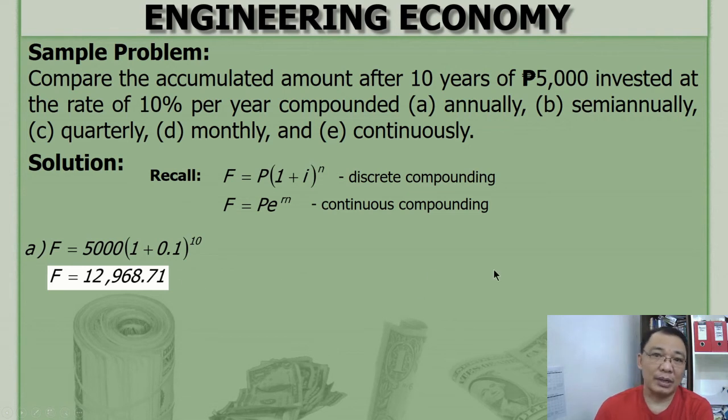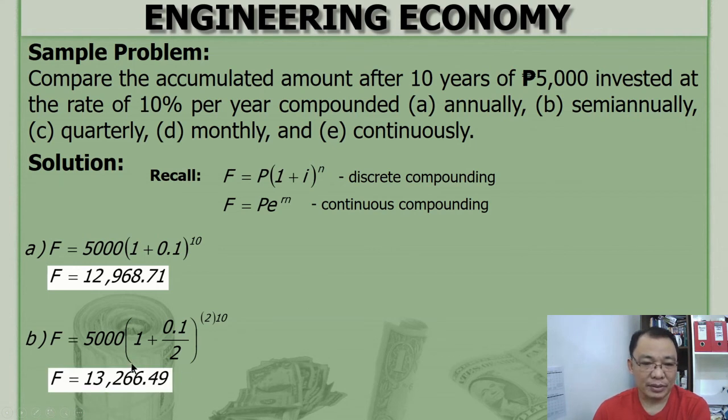For letter B, semi-annually, twice a year. So you're going to divide the nominal rate by 2, then percent over 2. And then you multiply the number of years by 2 also. Because 2 compounding periods per year. Like this one. And the accumulated amount is 13,266.49. So expected na mas bigger siya sa letter A. The more number of compounding periods, mas dako ang future amount. Because may increase ang interest.